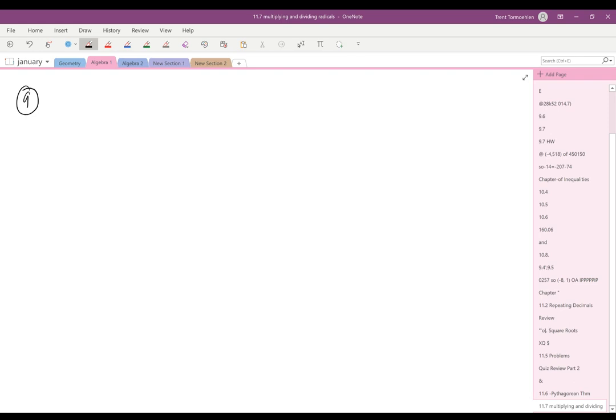Okay, so the first problem we're going to look at is number 9 from 11.6 problems. It says, what is the length of each diagonal of a cube that is 45 centimeters on each side?